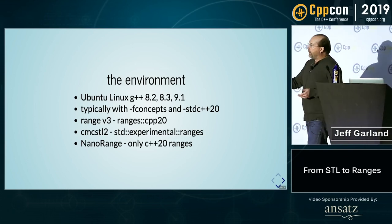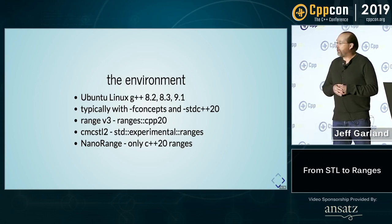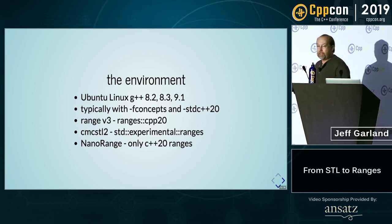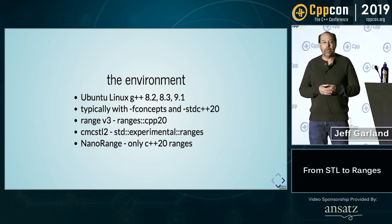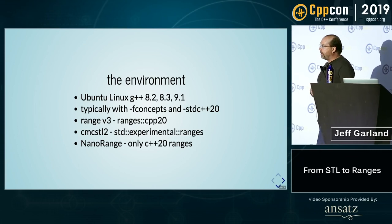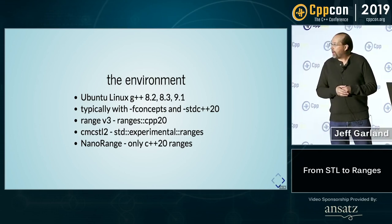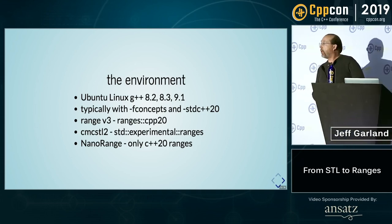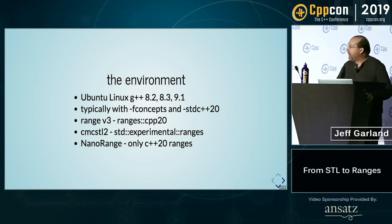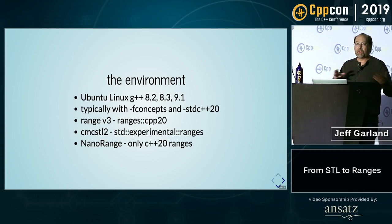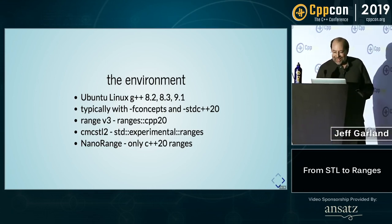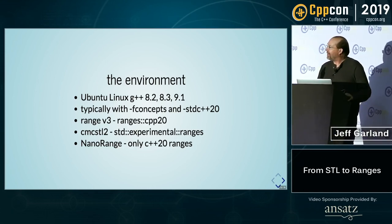There are three canonical implementations. Range V3, of course, is Eric Neibler's — that's the most famous one. If you ask for the ranges CPP20 namespace, that will get you the C++20 part of the library. CMC STL2 is Casey Carter's, and you use std::experimental::ranges to get the C++20 part. And then there's NanoRange with Tristan Brindle, who's sitting in the front row here — that's an independent development from the specification, which is very interesting. I learned about it at the conference this week and it's really cool.